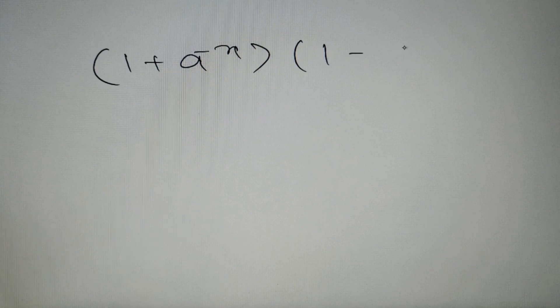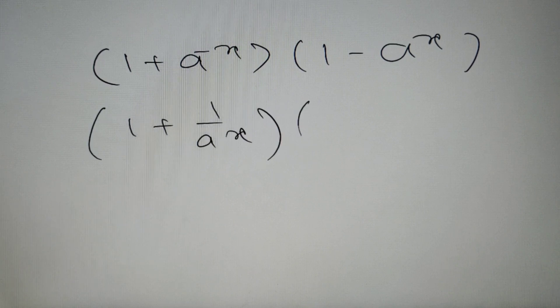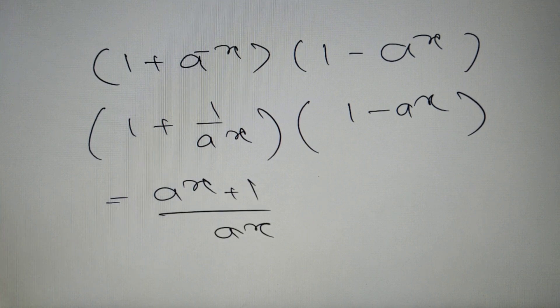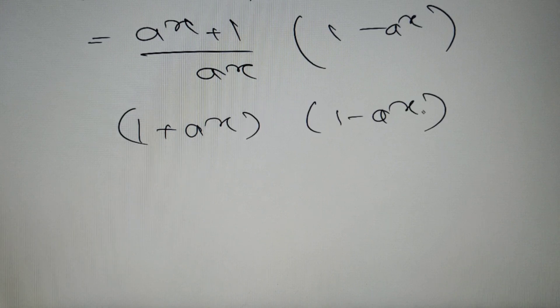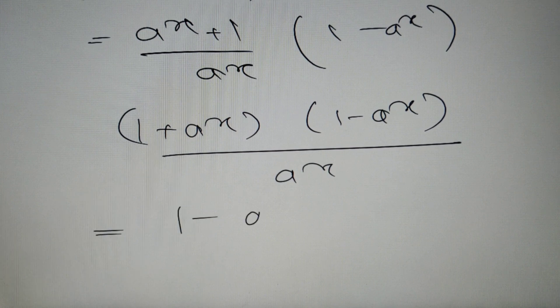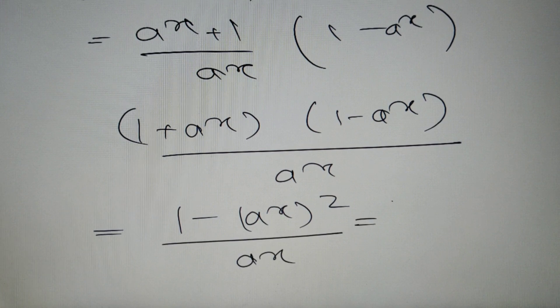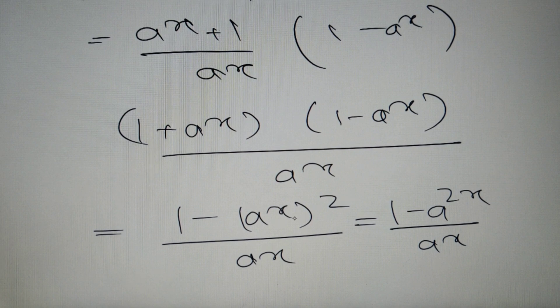The second question asks us to find the value of (1 + a^(−x)) times (1 − a^x). First, rewrite 1 + a^(−x) as 1 + 1/a^x, which equals (a^x + 1) / a^x. Multiplying by (1 − a^x), this gives (a^x + 1)(1 − a^x) divided by a^x. This is of the format (a + p)(a − p), which equals a² − p², giving (1 − a^(2x)) divided by a^x.